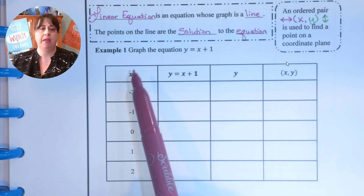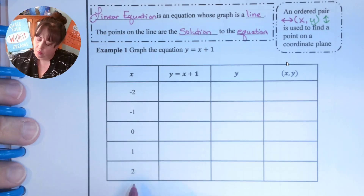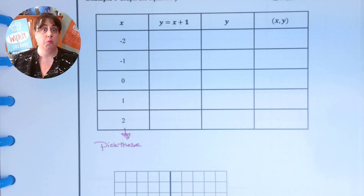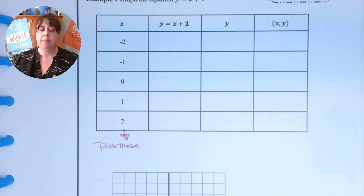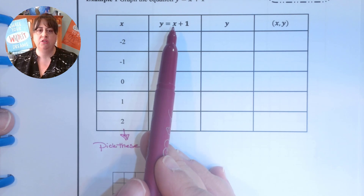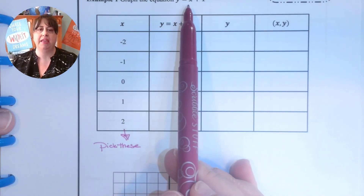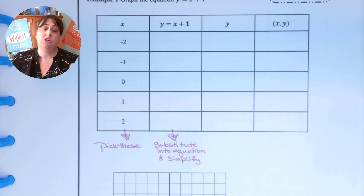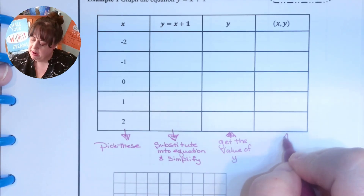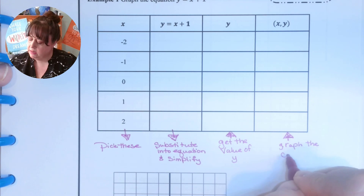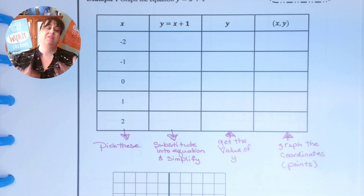We are going to start off with one of the ways that we can make a line, and that is just using ordered pairs. When you're doing ordered pairs, you pick any x's that you want — there's really no rule on what they have to be. They can be anything, but we tend not to use decimals. We tend to pick nice numbers and we tend to pick both positives and negatives. Then you substitute into the equation. We are graphing y equals x plus one. You substitute and simplify to get the value of y, then graph the coordinates.